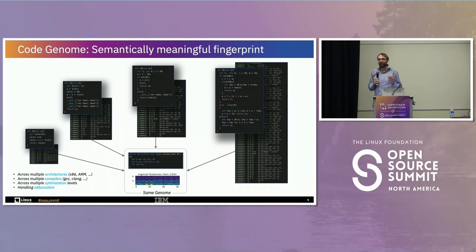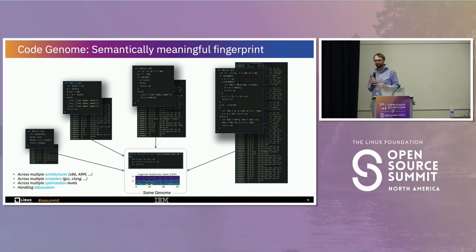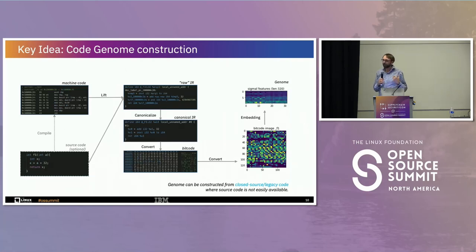How does the Code Genome actually work? We want semantically meaningful fingerprints. Here are four different versions of code that all compute the same function — they might differ in inline assembly, obfuscation, or additional routines — but they're doing the exact same computation. We canonicalize that into a single gene. We take the original source code, either compile it and lift to IR or go directly to IR, apply optimizations and different mutations to arrive at a single representative form of that code, and then apply the equivalent of a fuzzy hashing function to get an embedding. That embedding becomes the gene. We use LLVM IR in the Code Genome project.